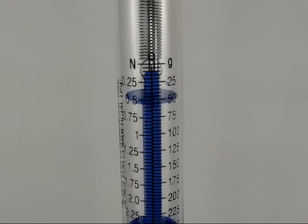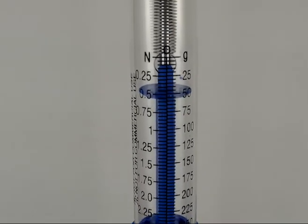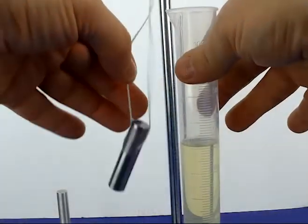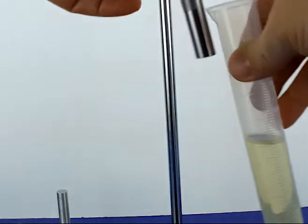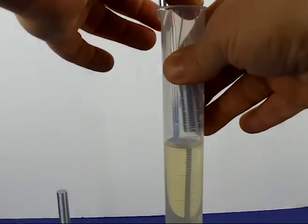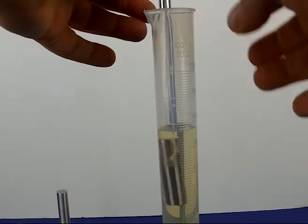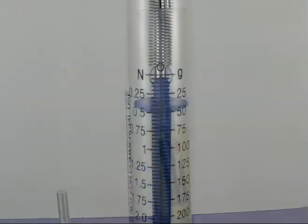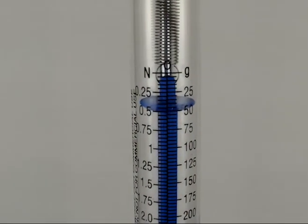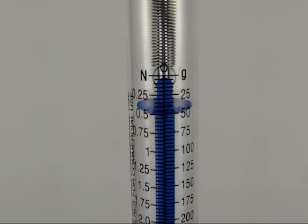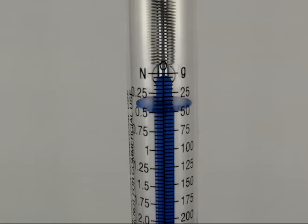Before we submerge this steel cylinder in water, this is our current weight of the object in air. So now I'm just going to place this in the cylinder. Make sure that's all under water, but the force on the steel cylinder is much less now because the water is exerting a buoyant force. It's just not enough to make it float.